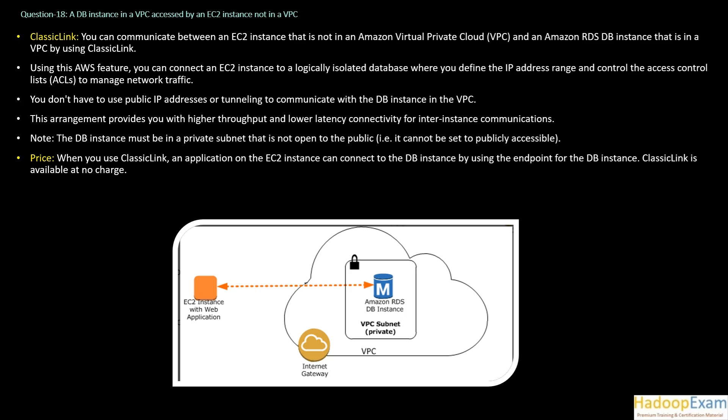For a DB instance in a VPC accessed by an EC2 instance not in a VPC, the solution is Classic Link. You can communicate between an EC2 instance that is not in an Amazon VPC and an Amazon RDS DB instance that is in a VPC by using Classic Link. So you need to use this Classic Link solution provided by Amazon.